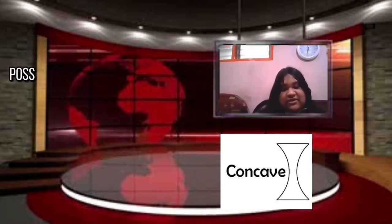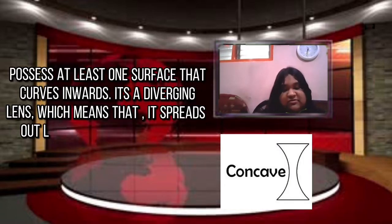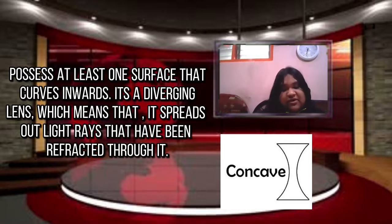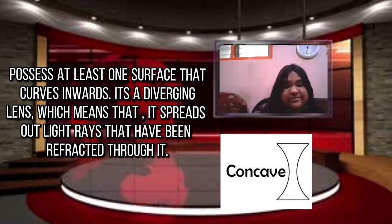A concave lens, however, possesses at least one surface that curves inwards. It's a diverging lens, meaning it spreads out light rays that have been refracted through it.